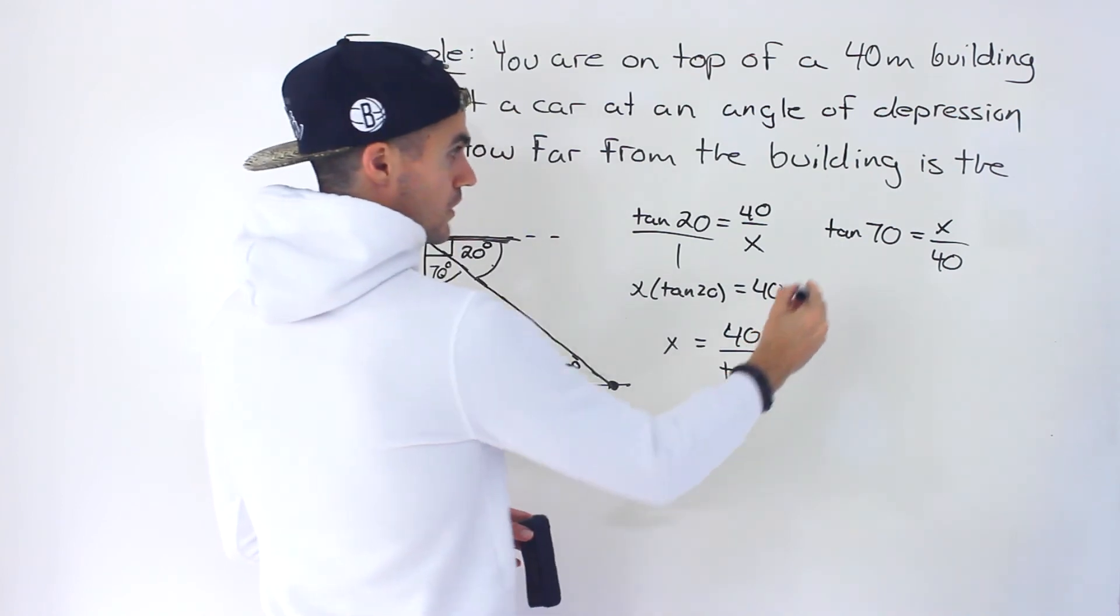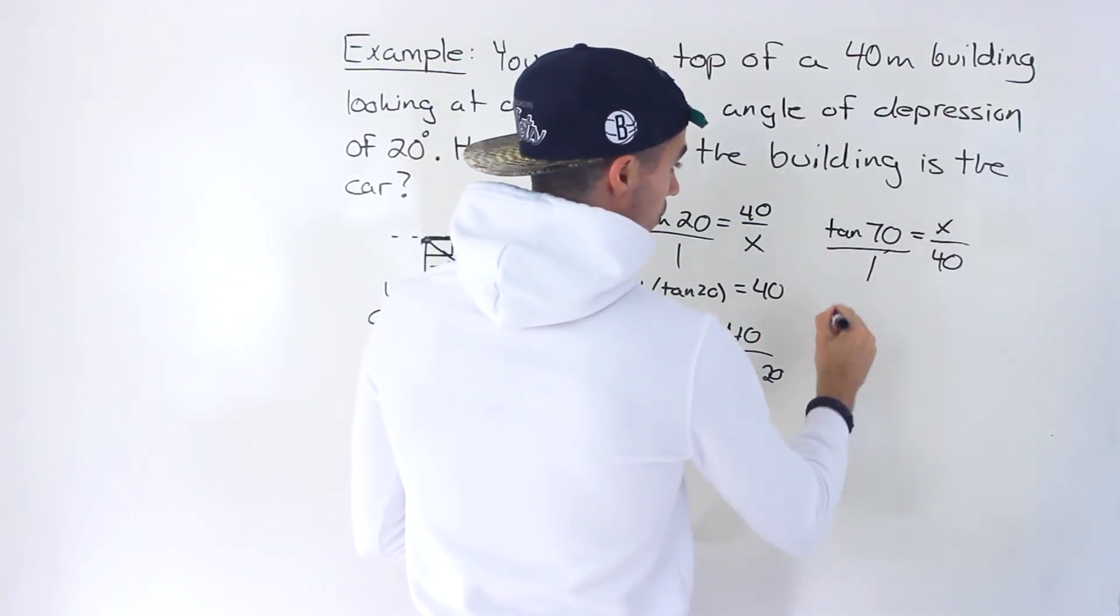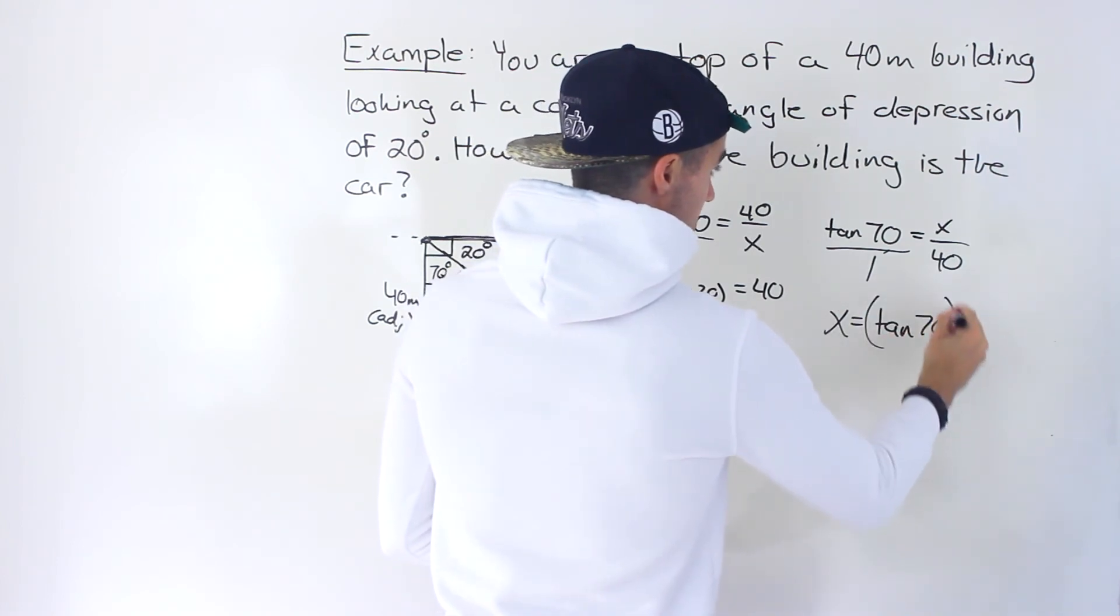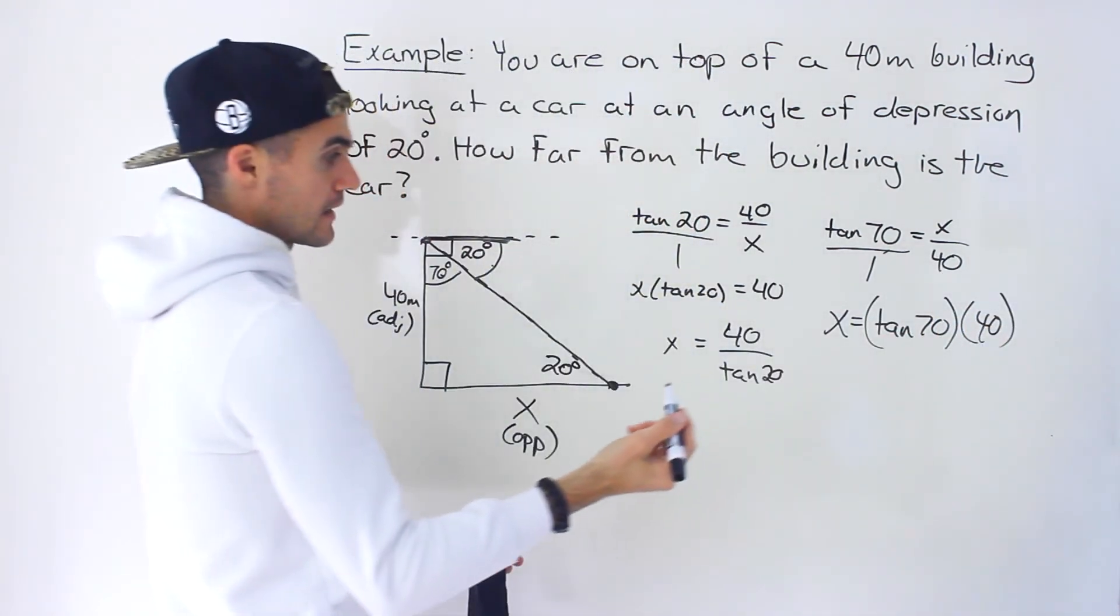Versus over here, if we cross multiply, the x would already be isolated itself. And you'd have tan 70 times 40 like that.